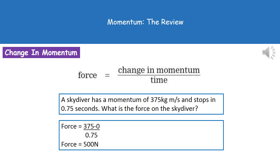So our skydiver, as we can see in our question, was travelling at 375 kilograms meters per second and we're going to then stop, so that means it's going to zero. So our difference then is 375 minus zero, which leaves us with 375. And then we divide that by the time, which as we can see from the question, was 0.75 seconds. So 375 divided by 0.75 in your calculator gives you your force of 500 newtons.